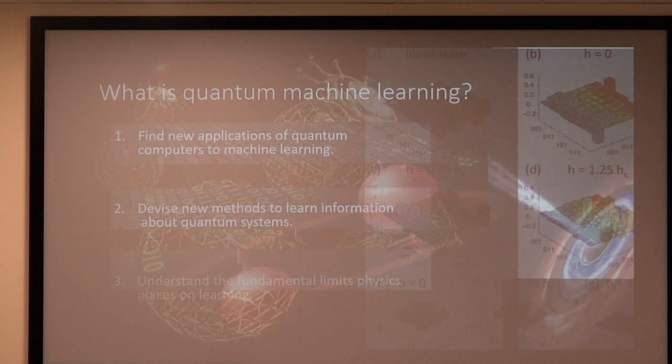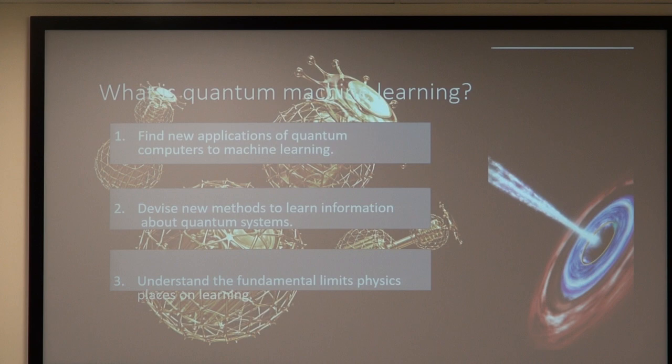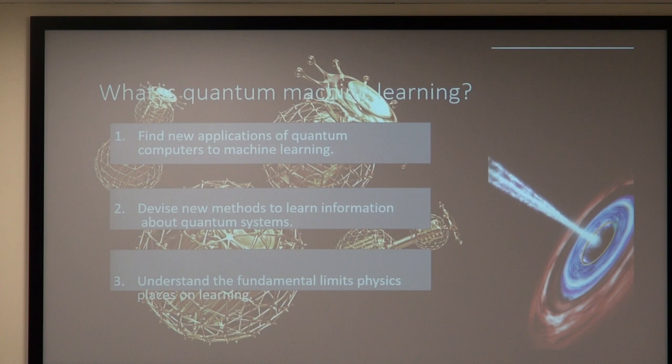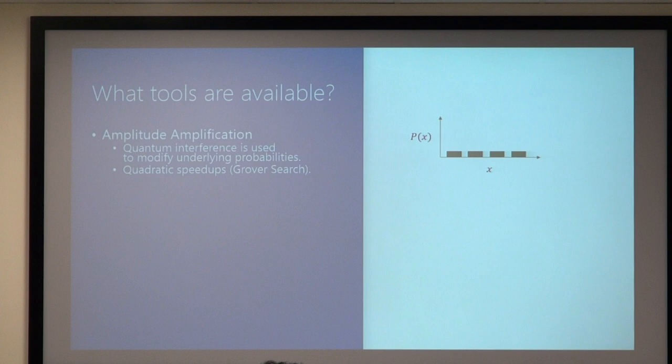One thing I'm very interested in—something Srini was also talking about—is that deep down we live in a quantum mechanical universe. What does that say about what we can learn? How much learning power is given to us by quantum examples versus classical examples? This gives us insight not just on machine learning itself, but on what it means to learn inside a quantum mechanical universe. All of these things fit together under the umbrella of quantum machine learning.